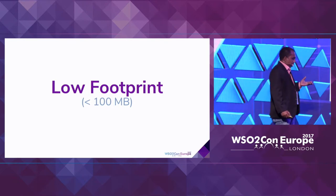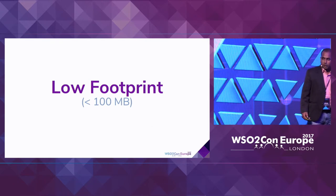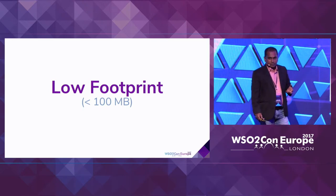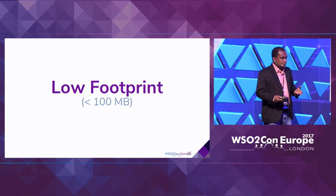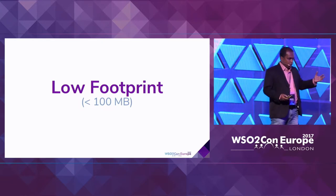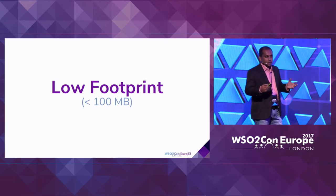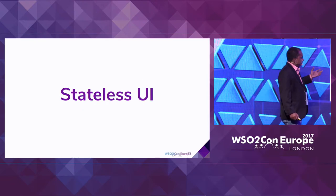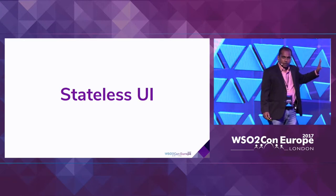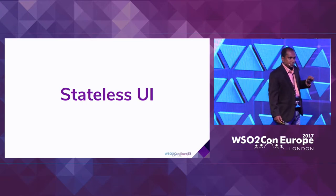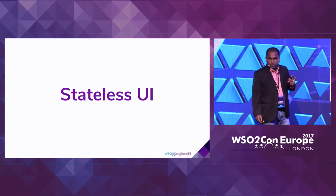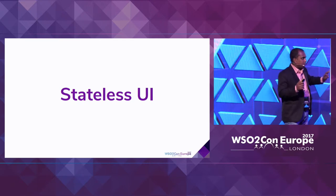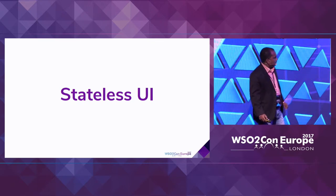Low footprint: since microservice architecture runs one thing in one microservice, we can cut down a lot of resources required for a particular service, optimizing resource utilization. This is also very useful for blue-green deployment — if you're using a lot of resources, blue-green deployment becomes too costly. Developers need to think carefully about their application development lifecycle. Stateless UI is another consideration.